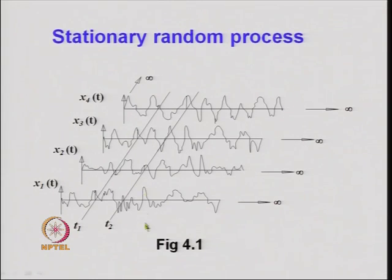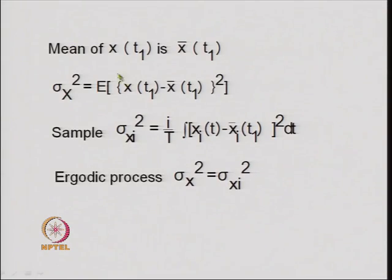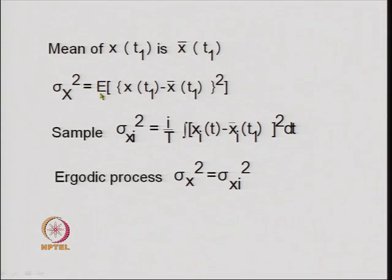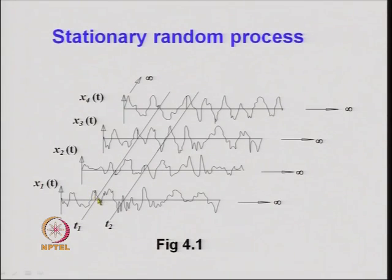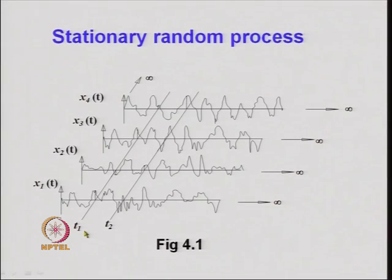Similarly, one can obtain the variance: taking x(t₁) values across the ensemble, subtracting the ensemble mean, squaring, and averaging gives the variance. If the variance at t₁, t₂, t₃, and t₄ are all more or less the same, we can say the variance is also invariant of the time shift.